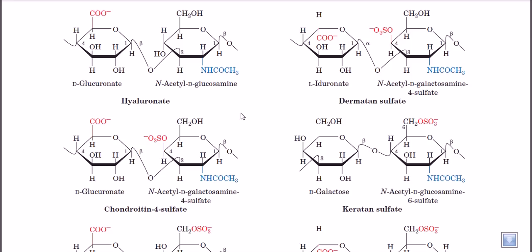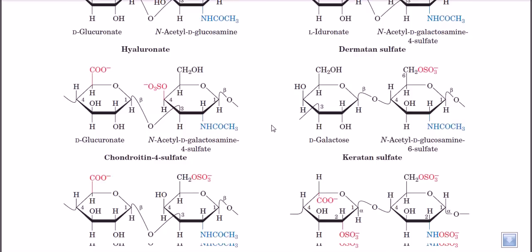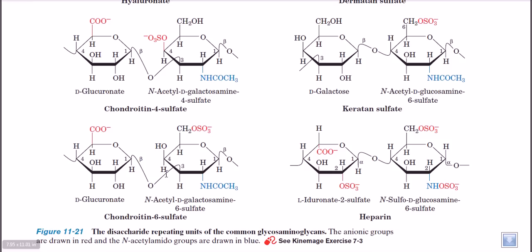Among these GAGs, we have N-acetyl glucosamine, N-acetyl muramic acid, and all of these glycosaminoglycans we have discussed are slight modifications of normal sugar, because an amine group is attached to the second carbon position. We also have chondroitin-6-sulfate — similar to chondroitin-4-sulfate but with the sulfate group placed at the sixth carbon position instead of the fourth.